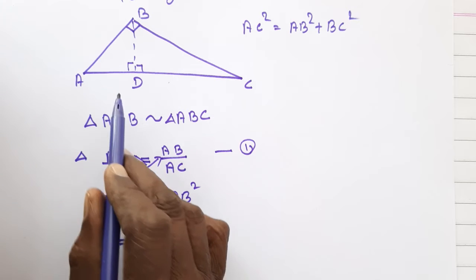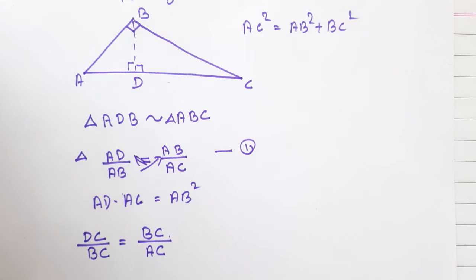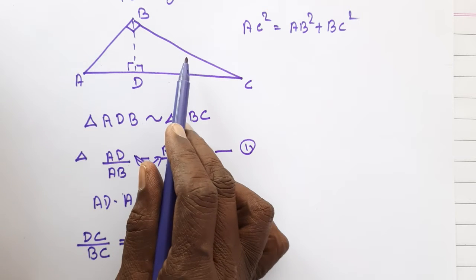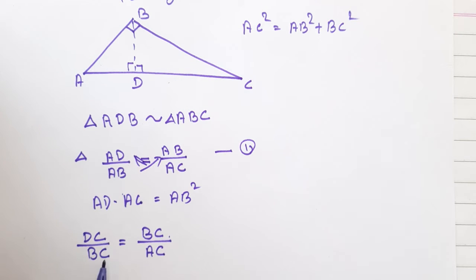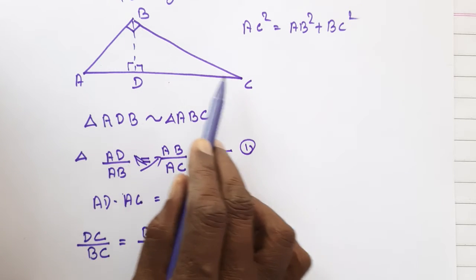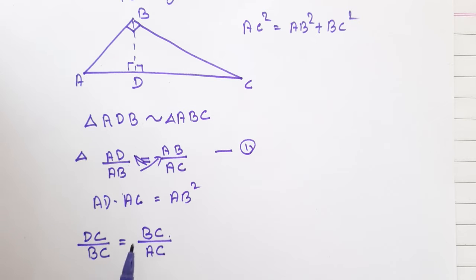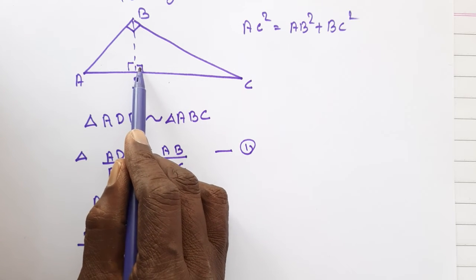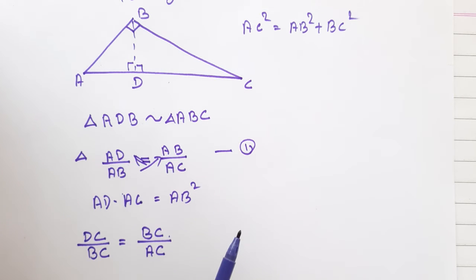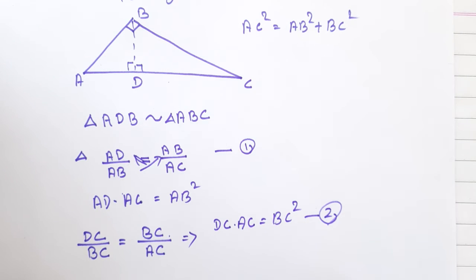DC by BC. Cross multiply: DC dot AC is equal to BC square. That is very simple compared to anything.